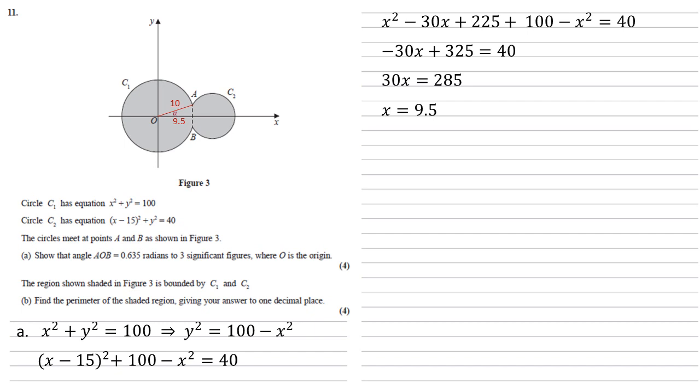Using this, we can find the angle alpha. So cos alpha equals 9.5 over 10. So alpha equals 0.31756. AOB must be double this, which gives us an angle of 0.635 as required.